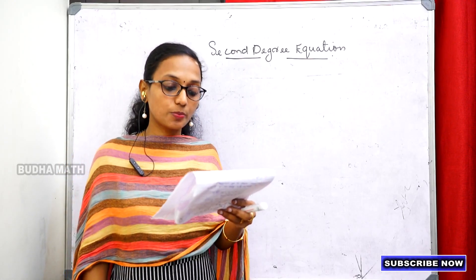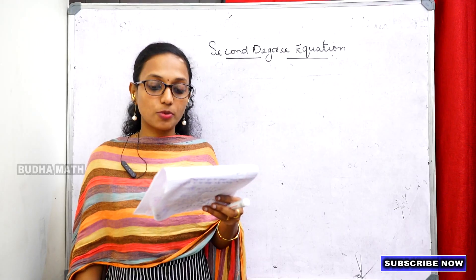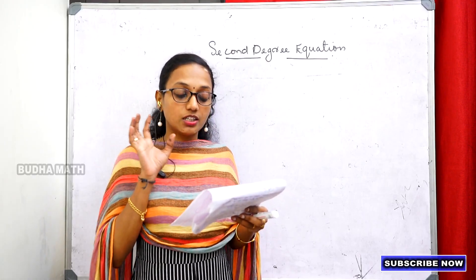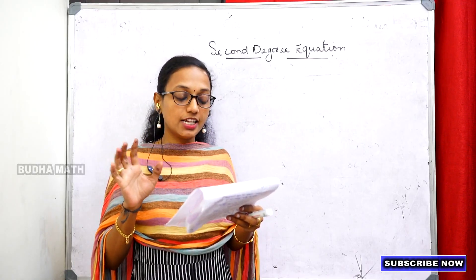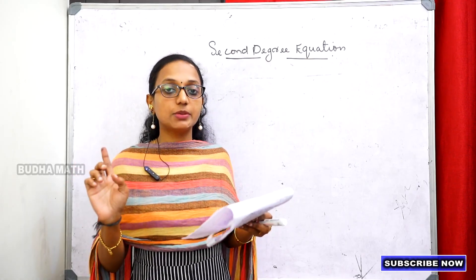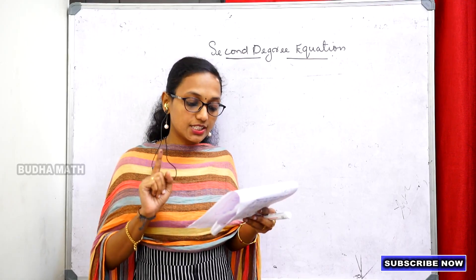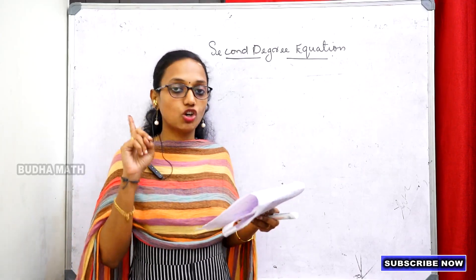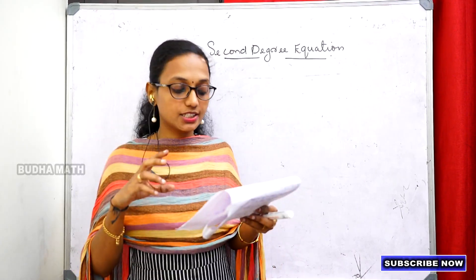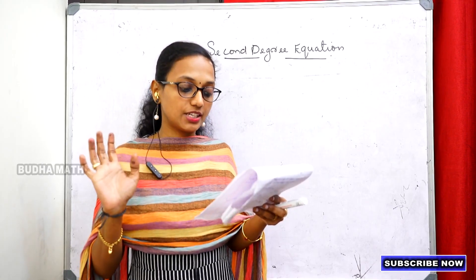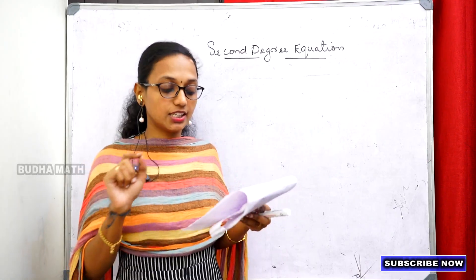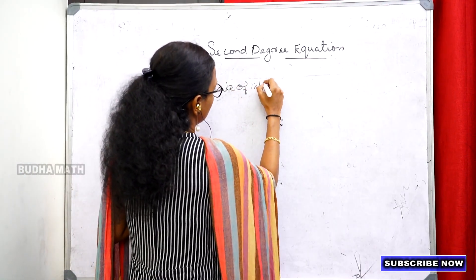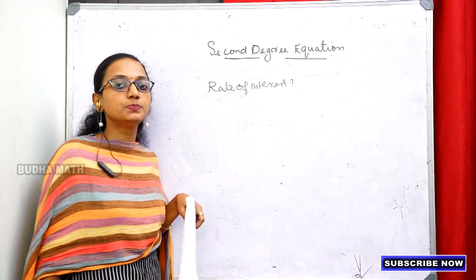The fourth question: 2,000 rupees was deposited in a scheme where interest is compounded annually. After 2 years, the amount in the account was 2,205 rupees. We will use the compound interest formula to find the rate of interest.